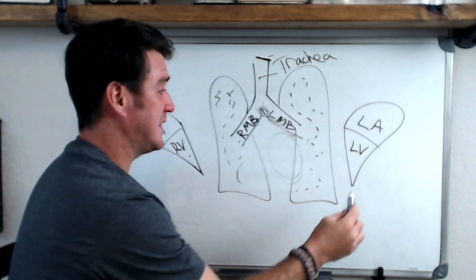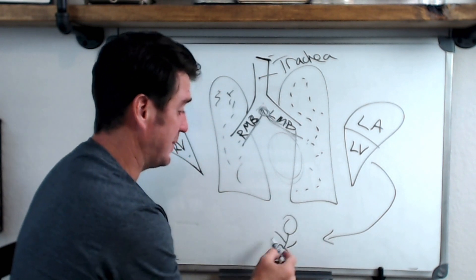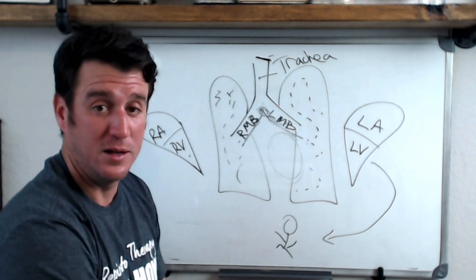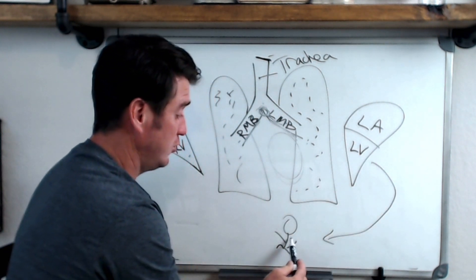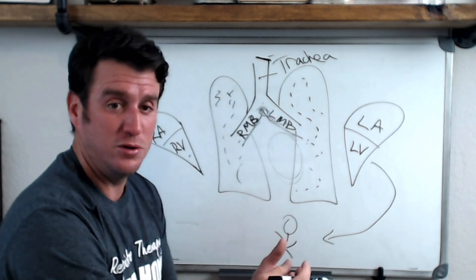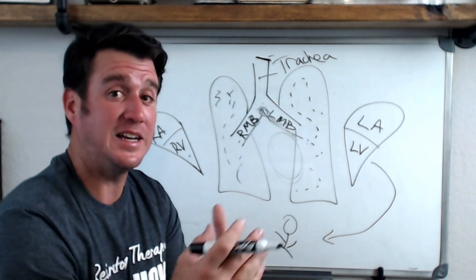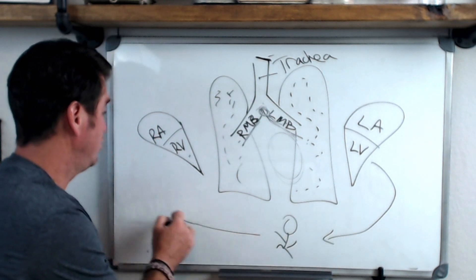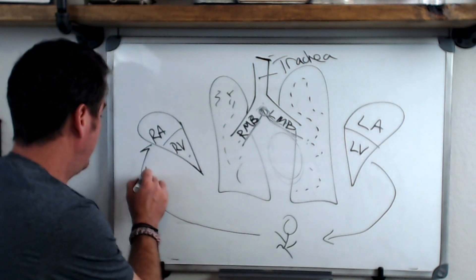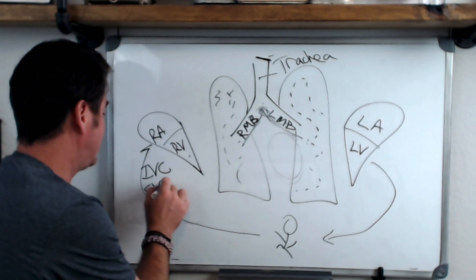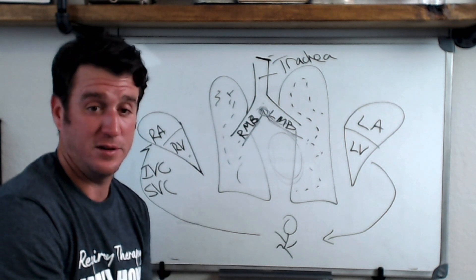The left ventricle pushes oxygenated blood out to systemic circulation so that the tissues and cells can consume oxygen, and they produce CO2. That deoxygenated blood then returns back to the right atrium through the IVC and the SVC — the inferior vena cava and the superior vena cava.